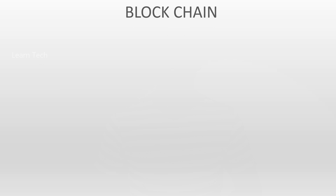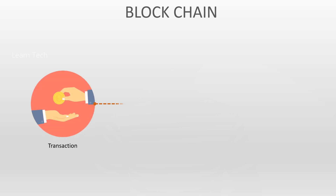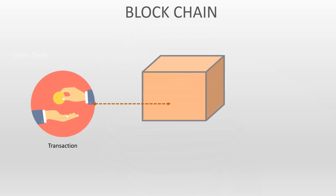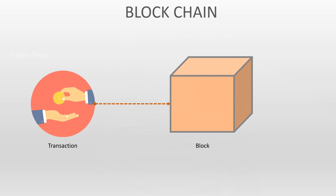Now we are talking about blockchain. We are creating a blockchain. In that blockchain, we have three pieces of information: one is data, one is a hash value, and one is a previous hash value.